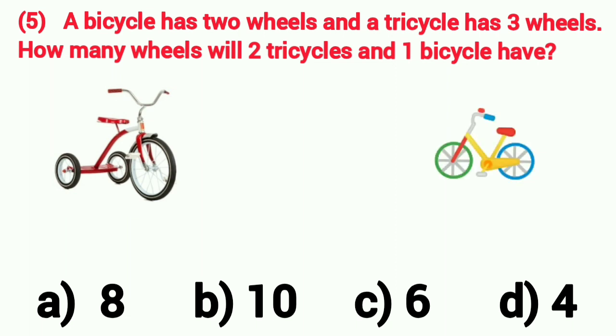Question number 5. A bicycle has 2 wheels and a tricycle has 3 wheels. How many wheels will 2 tricycles and 1 bicycle have? We are given 2 tricycles and 1 bicycle. Let's count all the wheels of these 3 cycles. 1, 2, 3, 4,